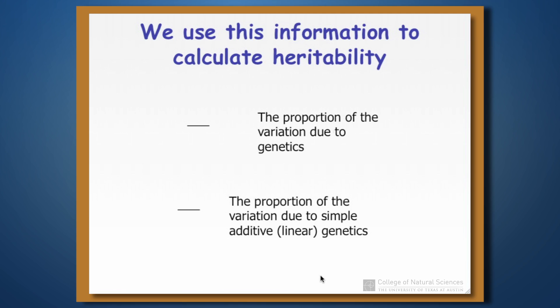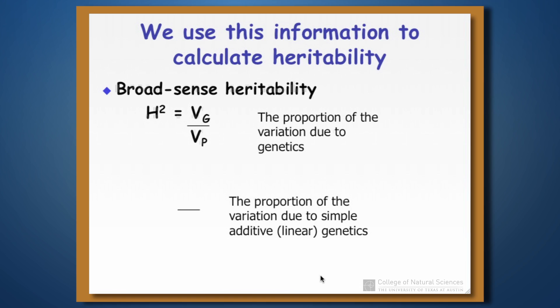We have two different types of heritability to calculate. The first type is broad sense heritability, symbolized as capital H squared. It's simply the genetic variance divided by the phenotypic variance. This ratio will almost always be less than one unless all of the variation in the population is due to genes with no environmental effect whatsoever. It tells us what proportion of the phenotypic variation is controlled by genes in some fashion.